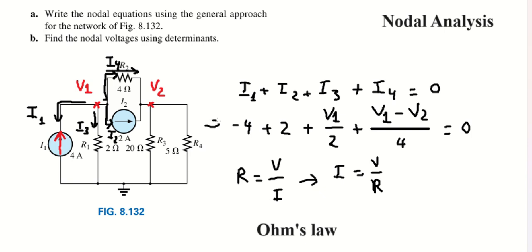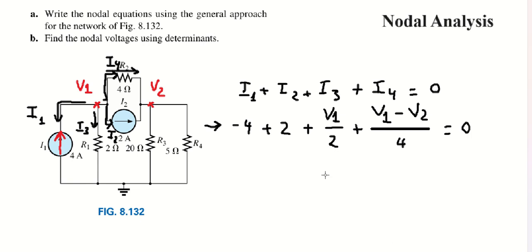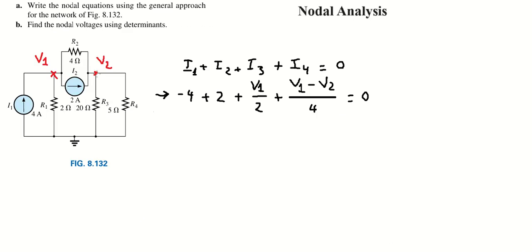So we just finish one equation. Now we go to V number two. In this case we follow the same approach, going to I number one, I number two, I number three, and I number four, and we apply the same method here.